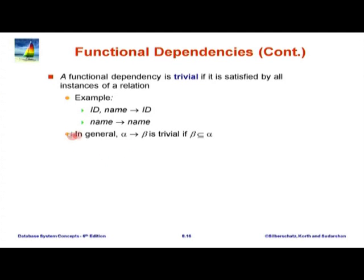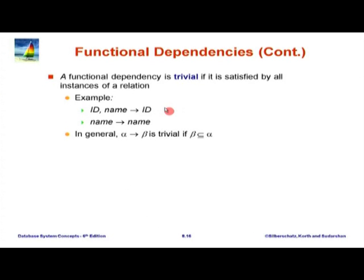Why do we care about trivial dependencies? When we do various operations, we will exclude trivial dependencies because in some sense they do not matter—they are obviously going to be true always. Maybe I should just continue with the next few slides, as they will answer many of these questions. What we are going to do now is look at the theory of functional dependency to some extent—we will go deeper into it later.